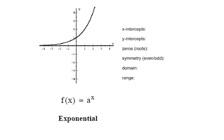The base is a real number that does not change. For example, f of x equals 3 to the x — the base of 3 never changes, and the input values become exponents on 3. When x is 1, y is 3; when x is 2, y is 9; when x is 3, y is 27. So these functions grow very rapidly from left to right.